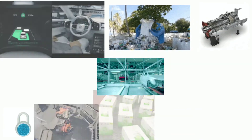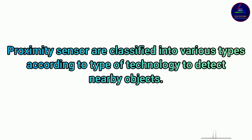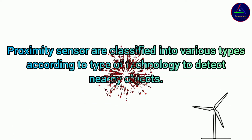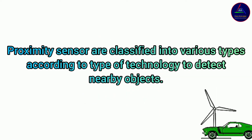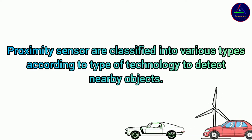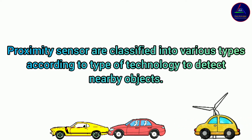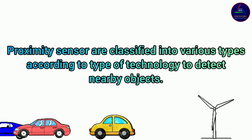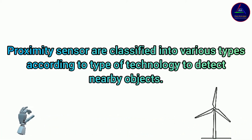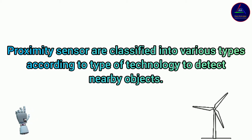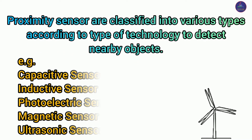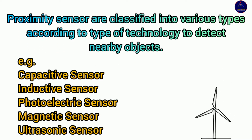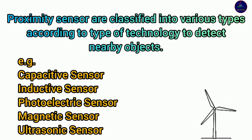Proximity sensors are classified into various types according to the type of technology used to detect nearby objects. Examples include capacitive sensors, inductive sensors, photoelectric sensors, magnetic sensors, and ultrasonic sensors.